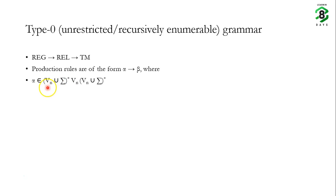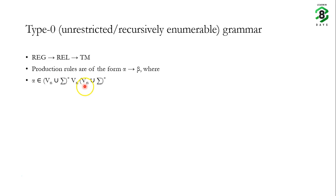This expression means alpha can be any combination of strings of length 0 or more taken from the union of Vn and sigma, but must contain at least one non-terminal in the middle. The shortest string from the star closure is epsilon, but the middle element must come from Vn, ensuring at least one non-terminal. Beta, on the other hand, has no restriction — it can be any combination of terminals and non-terminals, expressed as beta belongs to (Vn union sigma)*.